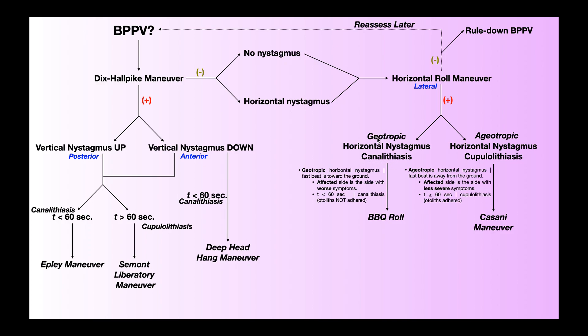When you have geotropic horizontal nystagmus or a lateral canalolithiasis, the affected side is the side with worse symptoms. You have to assess the horizontal roll maneuver on the left and on the right. Whichever side reproduces the worst symptoms for the patient is the affected side. So if the patient reports their dizziness and nausea are worse with a left horizontal roll maneuver, the affected side is the left horizontal or lateral canal, and the treatment of choice is the barbecue roll.